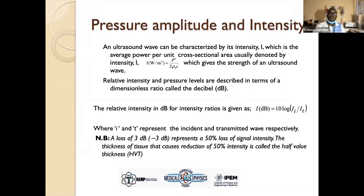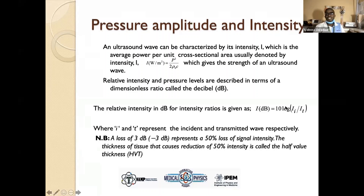From that equation, we can also look at the pressure amplitude and the intensity. An ultrasound wave is characterized by its intensity, which gives us a measure of the power of an ultrasound. Whenever we want to look at the safety effect of an ultrasound, we look at the pressure amplitude and intensity. We have this relative intensity measured in decibels — given as 10 times the log base 10 of the transmitted intensity over the incident intensity. When we get minus 3 decibels, it represents a 50% loss of intensity.